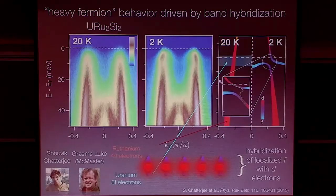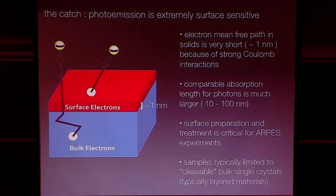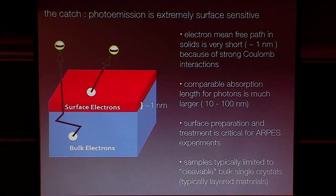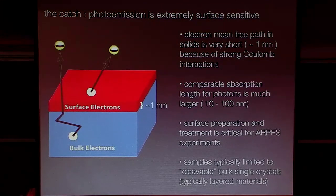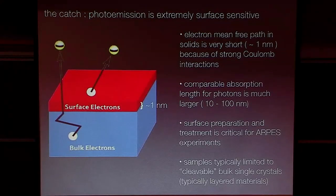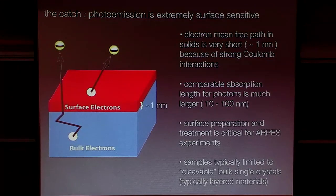Photoemission is a very powerful and useful tool for probing correlated quantum materials. It has one major Achilles heel: it's extremely surface sensitive, so surface preparation is a real challenge. Since this is an electron spectroscopy, any adsorbed water or any crud on the surface will completely mess up your experiment. The way we get around this — for uranium ruthenium silicide — is to put the sample in ultra-high vacuum at 10 to the minus 11 Torr and basically cleave it open just before the experiment, exposing an atomically fresh surface. This works well for materials that cleave nicely, like graphite or BSCCO or bismuth selenide, but not for many other materials.